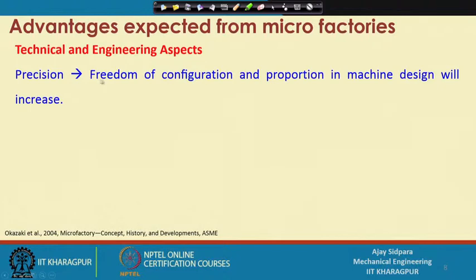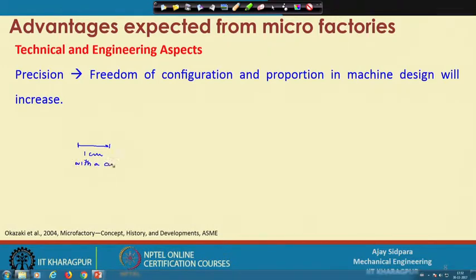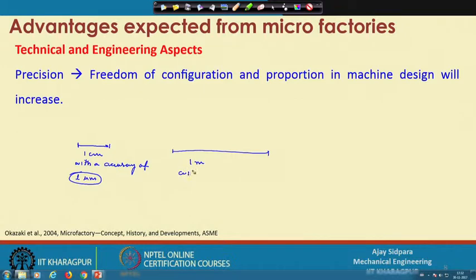One of the technical and engineering advantages is that precision, freedom of configuration, and proportion in machine design will increase. Suppose you want to move something from here to here and this distance is only 1 centimeter, then you have a lot of things — your accuracy distance is this much with an accuracy of 1 micron. Now this is one example, and another example is where the distance is 1 meter, and again you need the same accuracy of 1 micron.